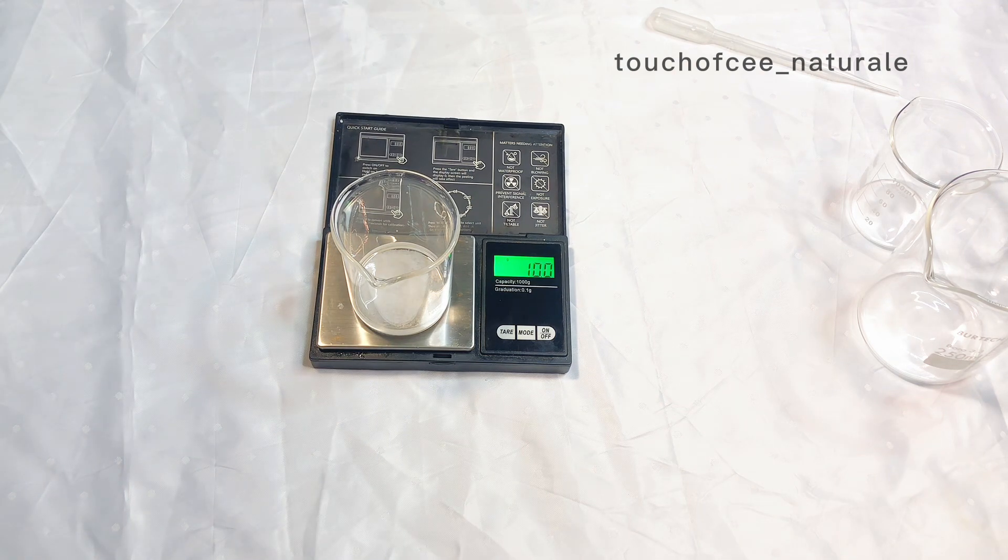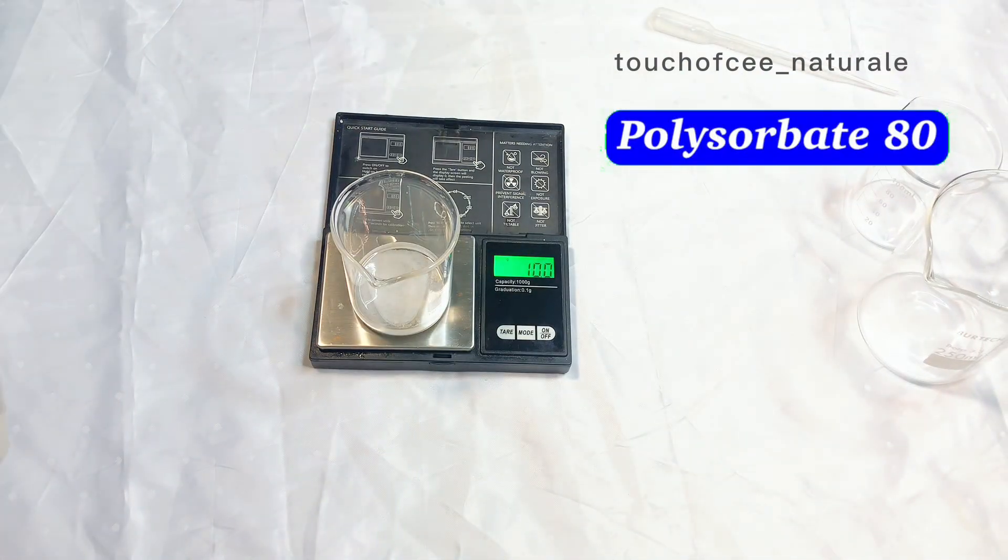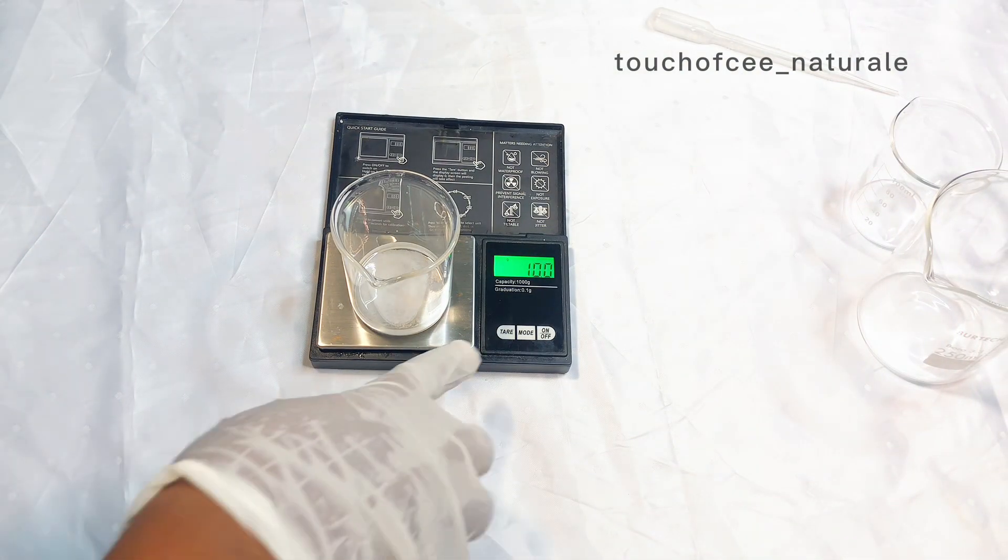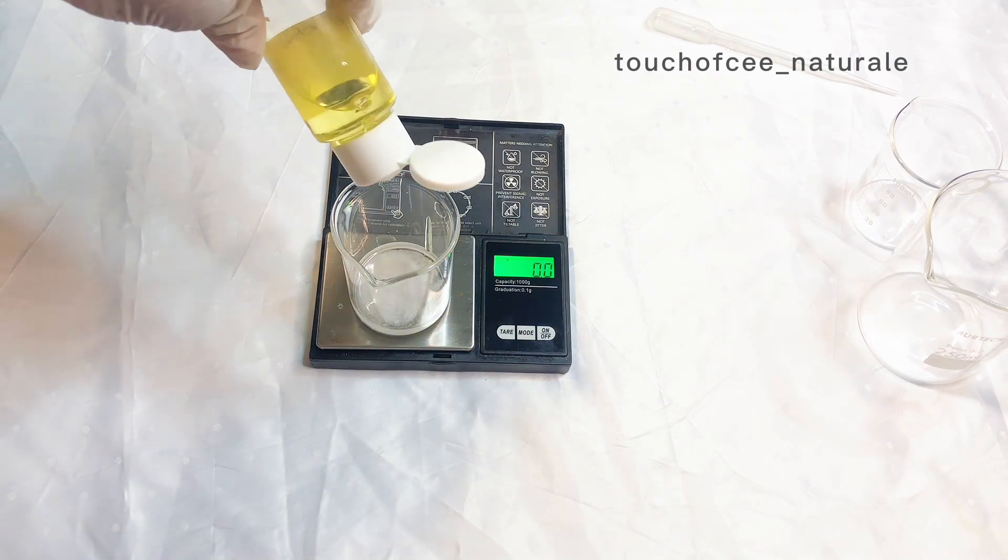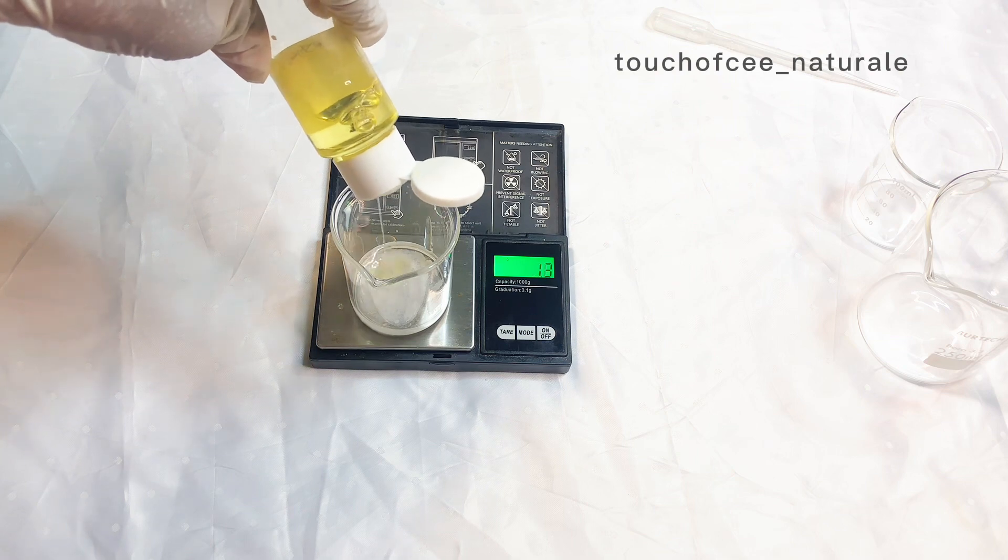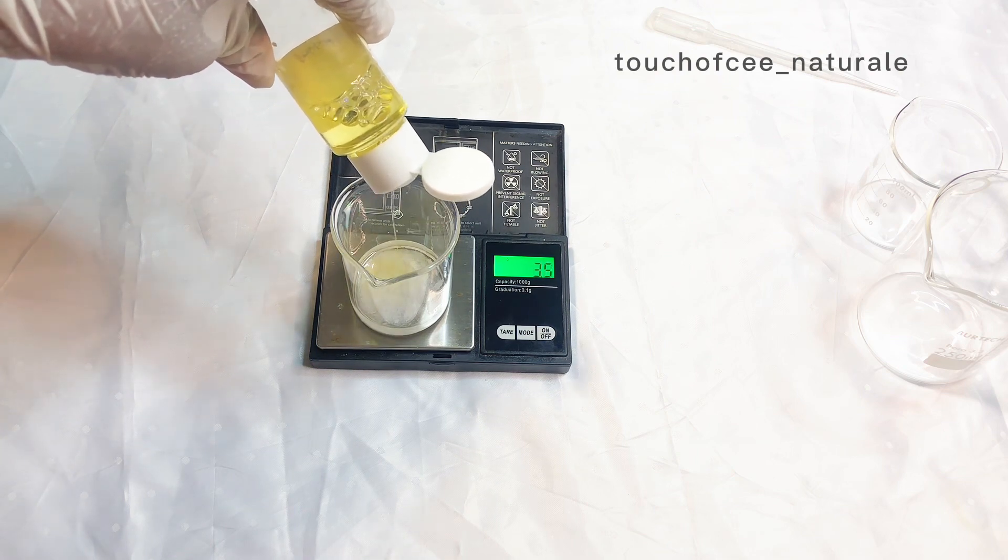So I'm using my polysorbate 80. You can use any other polysorbate, any other solubilizer of your choice. So I'm just measuring out my polysorbate 80 to keep my salicylic acid that will be dissolved as it is. That is what I'm doing.